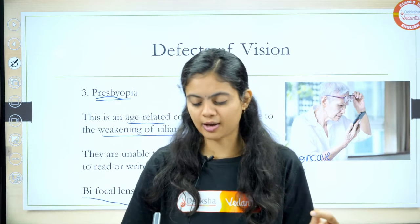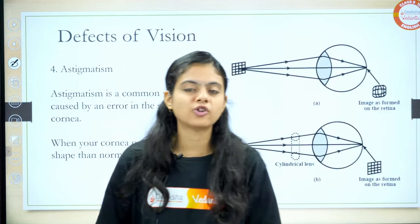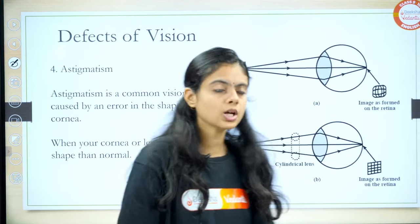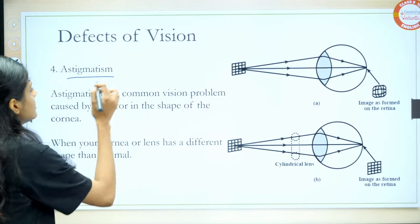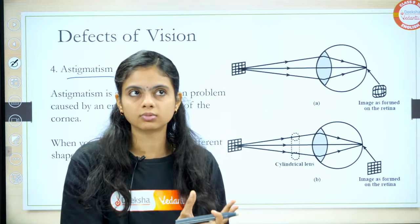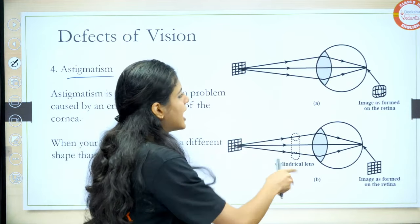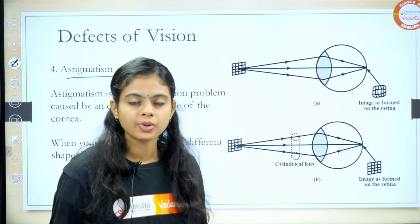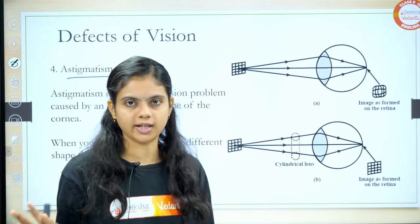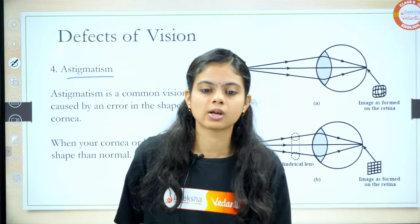Now you can understand why old people do like this — look through different parts of their spectacles. Physics enables you to understand what's going on around you and surrounding you. That's a very fascinating thing about studying physics. Moving to the next defect — astigmatism. Astigmatism is a common vision problem caused by an error in the shape of the cornea.